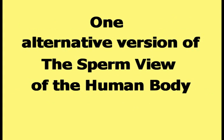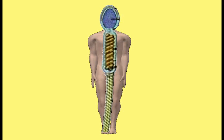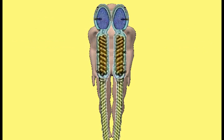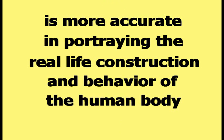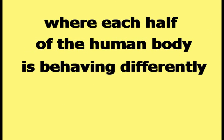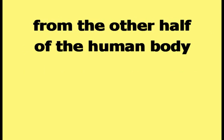One alternative version of the sperm view replaces the single large sperm in the center of the body with one large sperm on each half of the body. This two-sperm version is more accurate in portraying real-life construction and behavior, because it can portray behaviors where each half of the human body is behaving differently from the other.